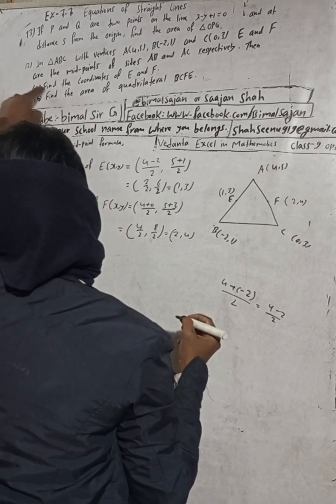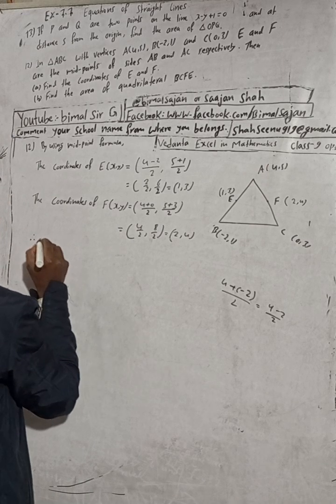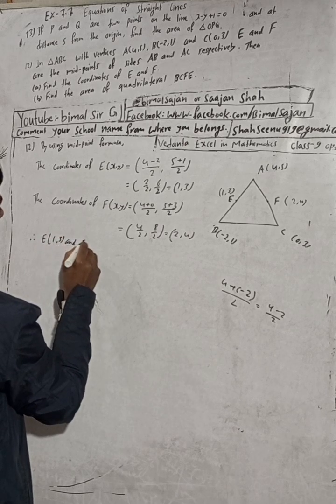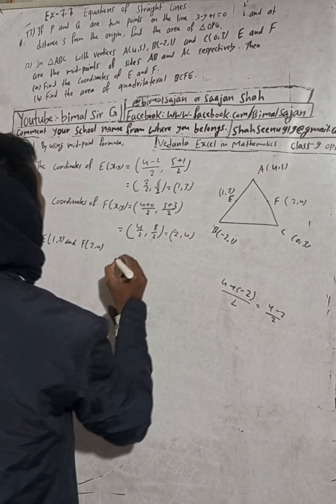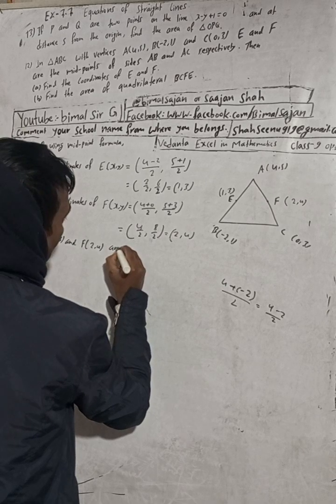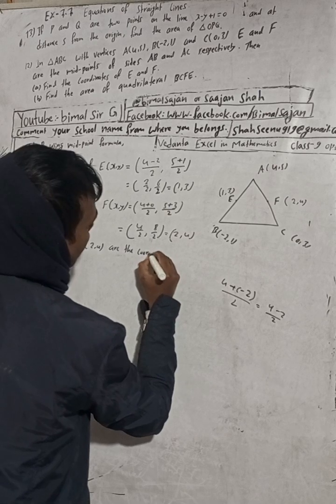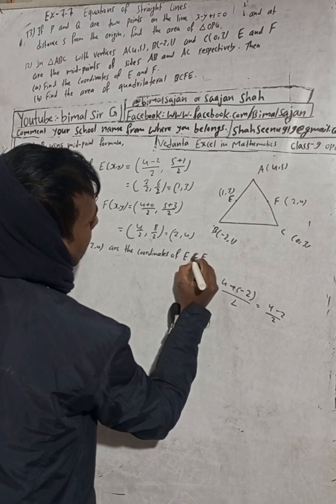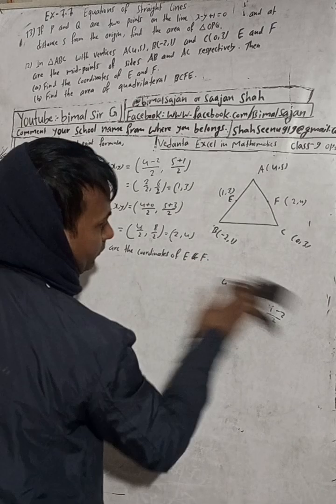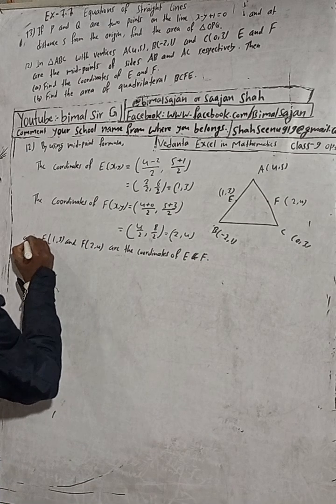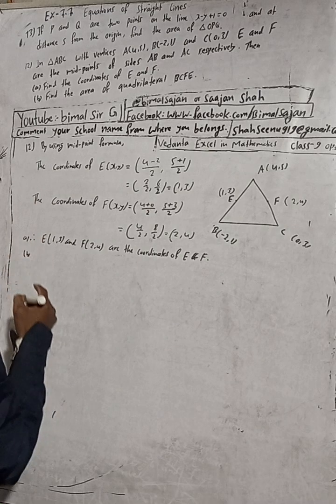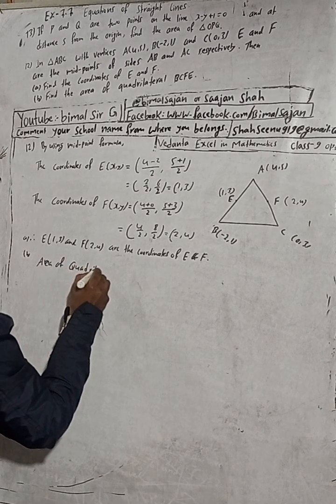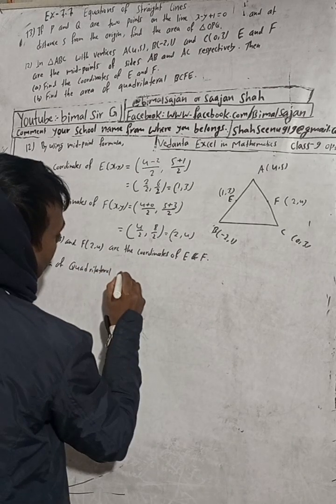Therefore, the coordinates of E and F are E(1,3) and F(2,4). Now part B: Find the area of quadrilateral EBCF.